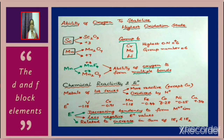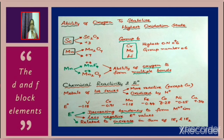Oxygen also has the ability to stabilize the highest oxidation state. Scandium exhibits +3 in Sc₂O₃, and manganese exhibits its highest oxidation state of +7 in Mn₂O₇. For group 6 elements (Cr, Mo, W), the group number equals the highest oxidation number, which is +6. Manganese forms MnF₄ (oxidation state +4) and Mn₂O₇ (oxidation state +7), showing that oxygen, through its ability to form multiple bonds, stabilizes the higher +7 state rather than fluoride.